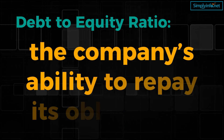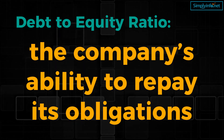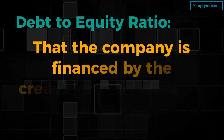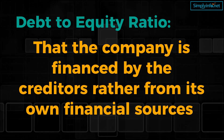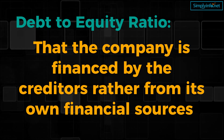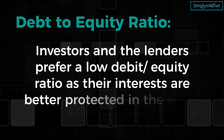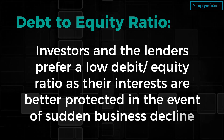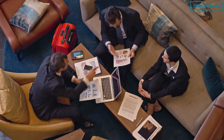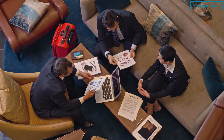The two components in calculating the formula are obtained from the company's balance sheet. It also measures the company's ability to repay its obligations. If the ratio is increasing, it means that the company is financed by the creditors rather than from its own financial sources, which is a dangerous trend. Generally, investors and lenders prefer a low debt-to-equity ratio as their interests are better protected in the event of a sudden business decline. Companies with a high debt-to-equity ratio may not be able to attract more lending capital.